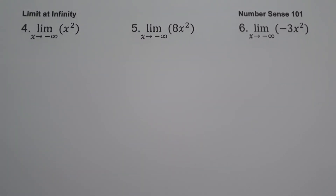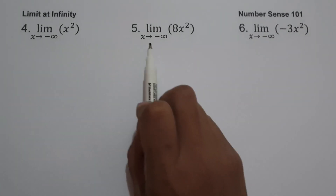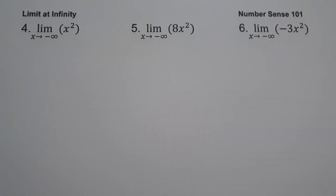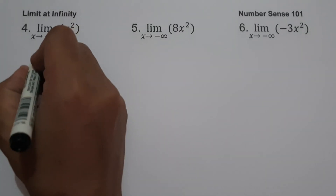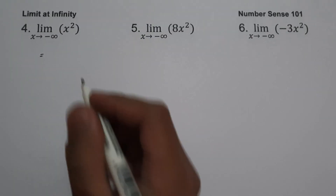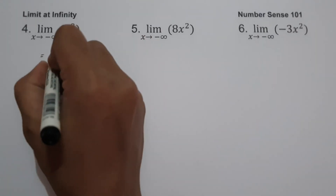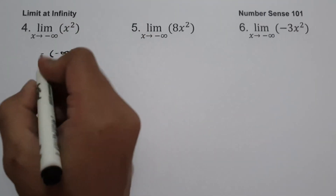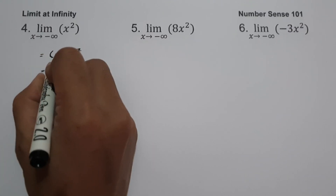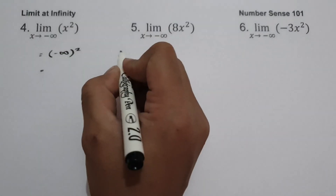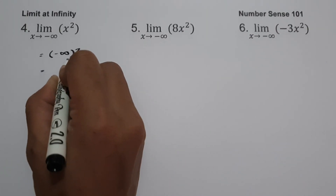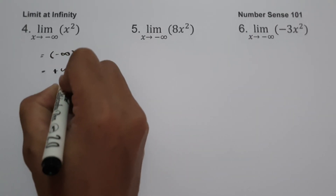In example number 4, we have the limit of x squared as x approaches negative infinity. We substitute: x squared gives us negative infinity squared. Negative infinity raised to 2 means negative multiplied by negative, which is positive, so the answer is positive infinity.